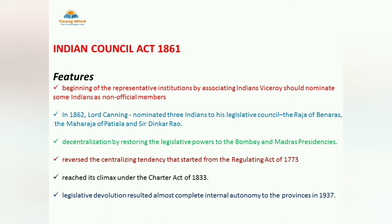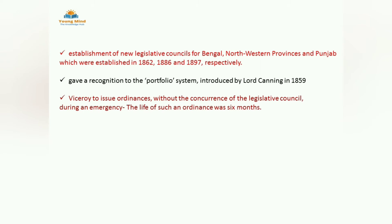New legislative councils were established for Bengal, the North-Western Frontier, and Punjab in 1862, 1866, and 1897 respectively. The portfolio system was also introduced — that is ministership, like home minister, defense, finance, etc. This is the gift of the British; they introduced the portfolio system, and it was introduced by Lord Canning in 1859 — this question has been asked once in an exam. Notes in PDF will be provided; you can download from the Telegram channel link given in the description box below.